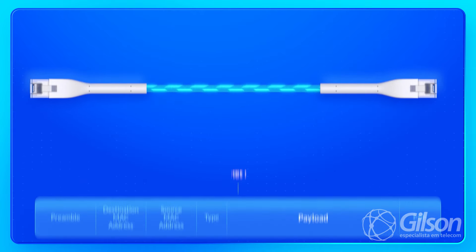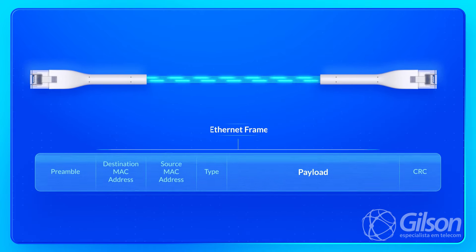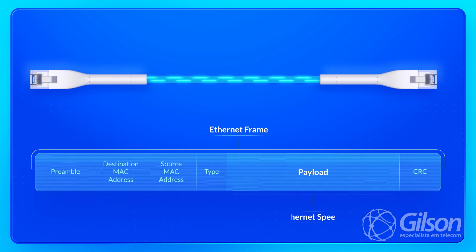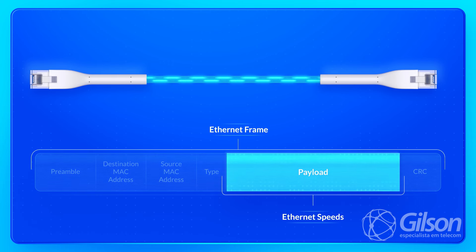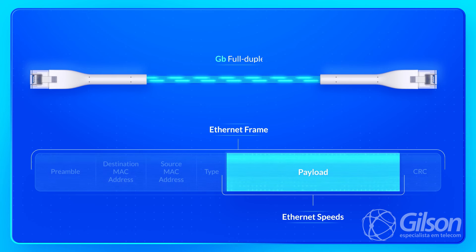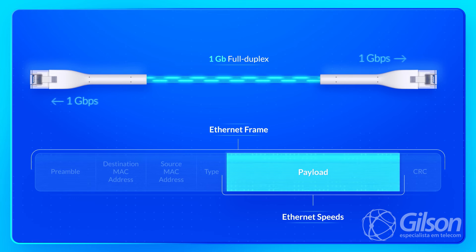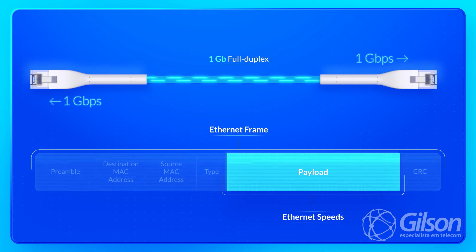Isso depende do dispositivo, do AP, do sinal, uma série de coisas. Já no cabo, a gente não tem isso, porque o pacote Ethernet — o frame dele — é muito mais compacto, não tem todo aquele overhead. Então você está com 1 giga, praticamente você atinge 1 giga. Tem uma perdinha mínima, mas você consegue atingir 1 gigabit por segundo full duplex quando você está no cabo de rede. No cabo de rede você não vai ter perdas. Esse é o primeiro ponto.